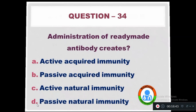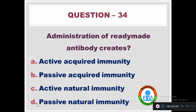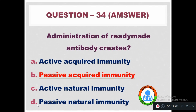Question 34: Administration of ready-made antibody creates — Option A: Active acquired immunity. Option B: Passive acquired immunity. Option C: Active natural immunity. Option D: Passive natural immunity. The right answer is Option B — passive acquired immunity.